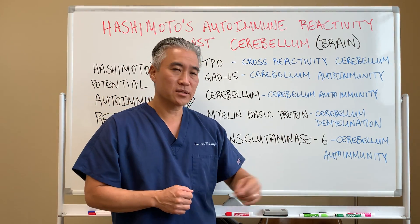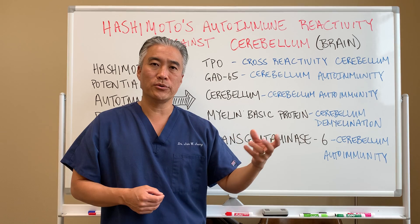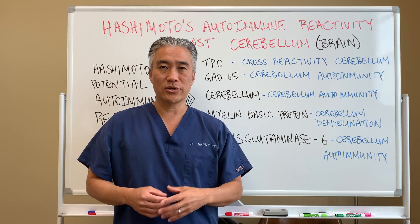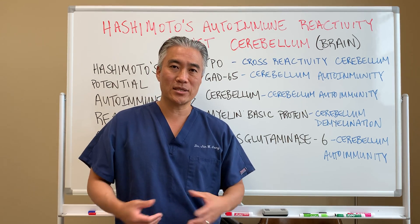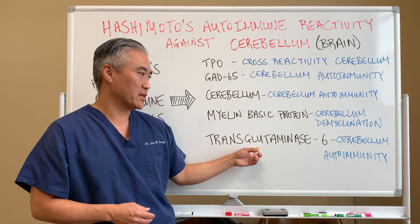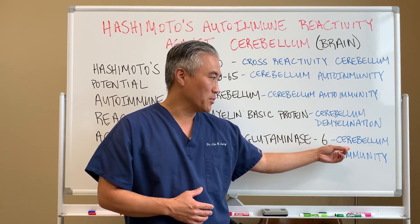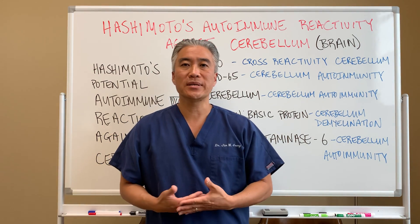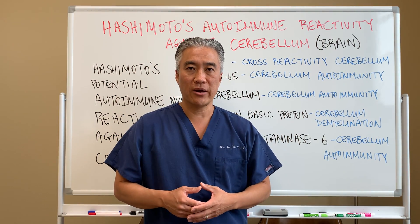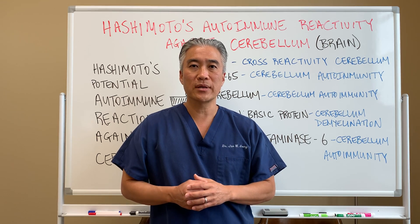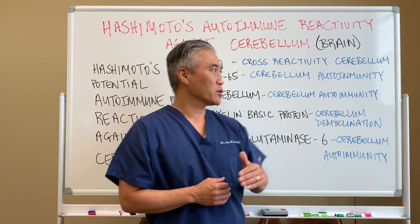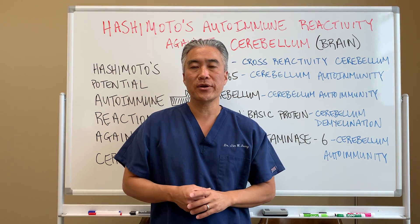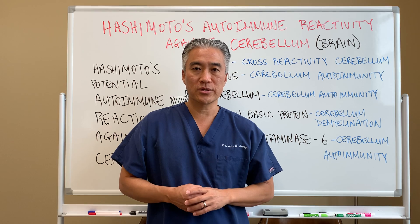Transglutaminase-6 is another neurological or neuronal antibody, very common with patients who have gluten issues. There's a term called gluten ataxia, because gluten can cross-react with transglutaminase-6 and then develop issues with the cerebellum. So when we have a patient who comes in with long-standing Hashimoto's thyroiditis but also complains about balance issues, we need to go ahead and check for these antibodies to see if they have a secondary autoimmune disease to Hashimoto's thyroiditis, primarily affecting the cerebellum.